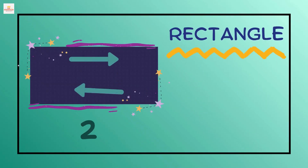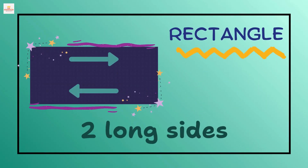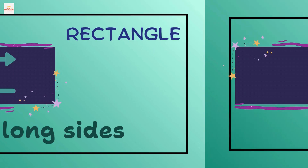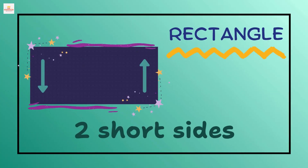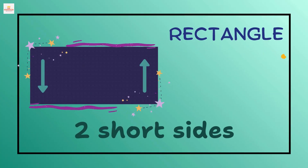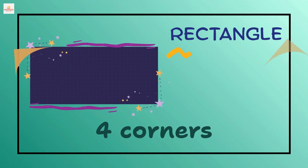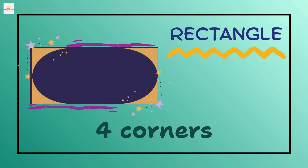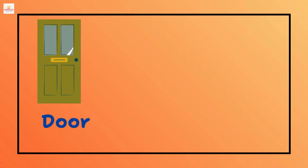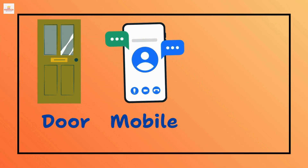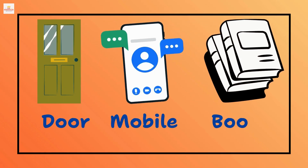It has 2 long sides, 2 short sides and 4 corners. We see rectangles in a door, a mobile phone and a book.